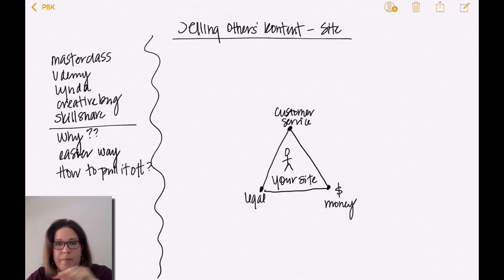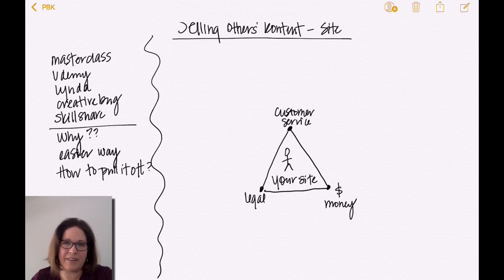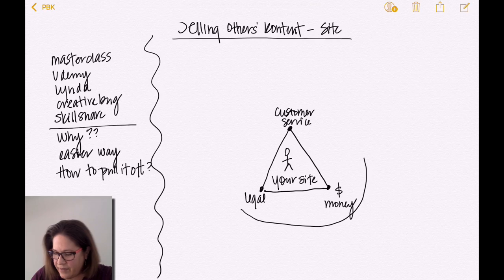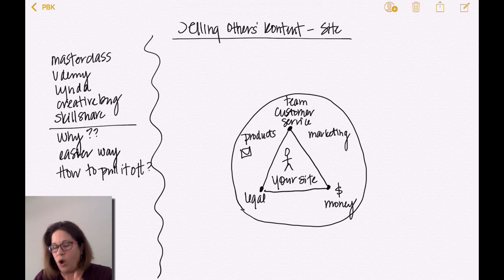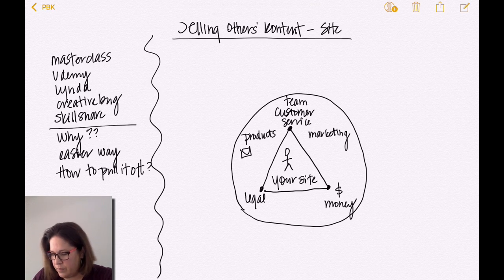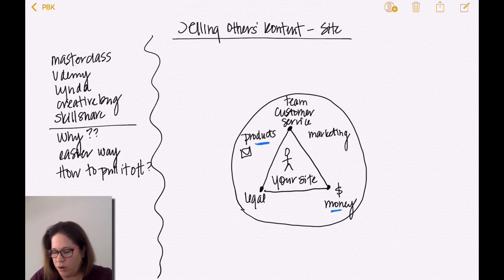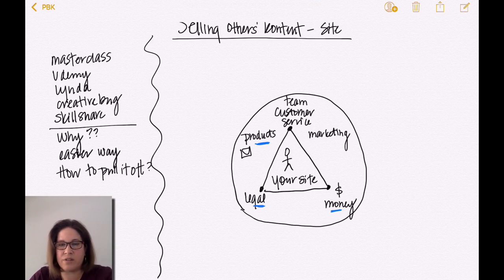Within those three pieces — I know you're thinking about your email, your products, your membership site, your team, your videos — all of that lives in our bubble. We can put products, email, marketing, and our team in here, but all of those pieces will fall into legal, customer service, and money. Those are your anchor points. When you're selling your products, collecting money, or crafting your purchase terms — that's inside the circle.